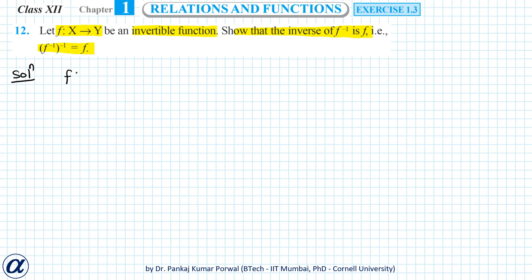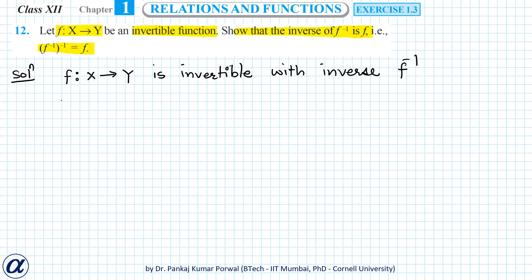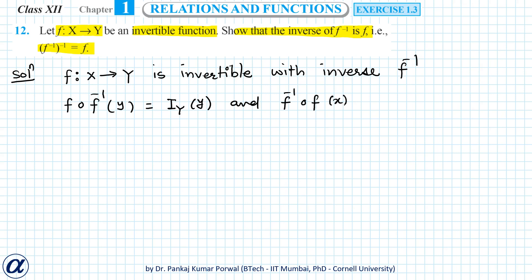So f from X to Y is invertible with inverse f inverse. We know that the composition of a function and its inverse equals the identity function: f ∘ f⁻¹ on Y equals the identity function of Y, and f⁻¹ ∘ f on X equals the identity function of X. Let's call this equation one.